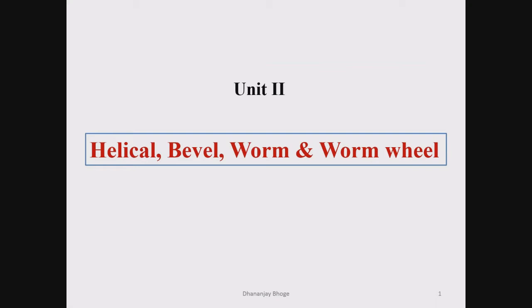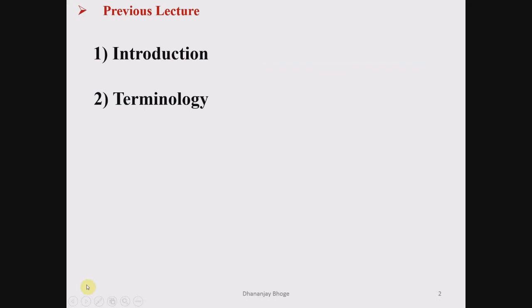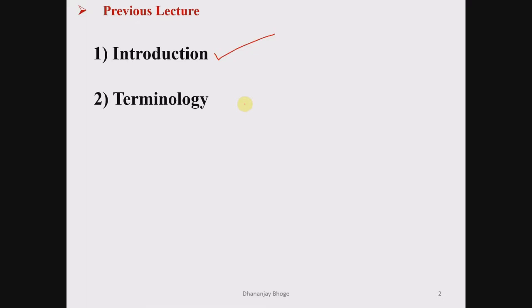We are studying helical gears in unit number two. After helical gears, we will go for spiral gears, bevel, and worm and worm wheel. In the last lecture we saw the introduction to helical gears. Helical gears have high load carrying capacity compared to spur gears because of the inclination of teeth — the area of contact is increased. These gears are used for high load and high speed applications, and their engagement is also gradual.